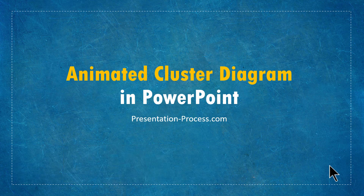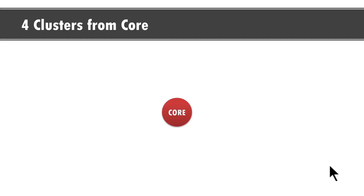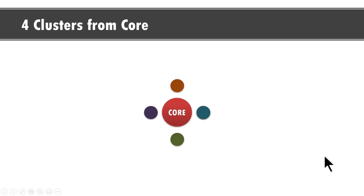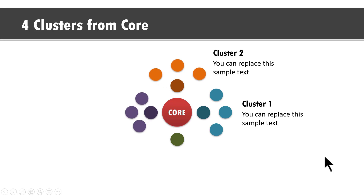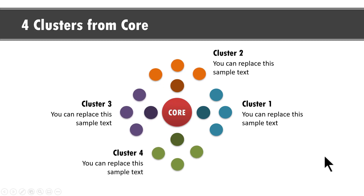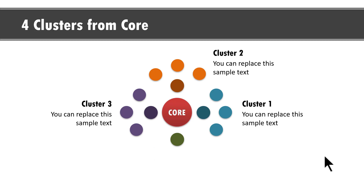The beautiful animated cluster diagram you will learn to create today looks like this. You have a core object in the middle, then we have four allied objects, and then each of those objects leads to a cluster like this. This is a cluster diagram. If you want to talk about how your company grew its products or services, you can use this useful diagram.